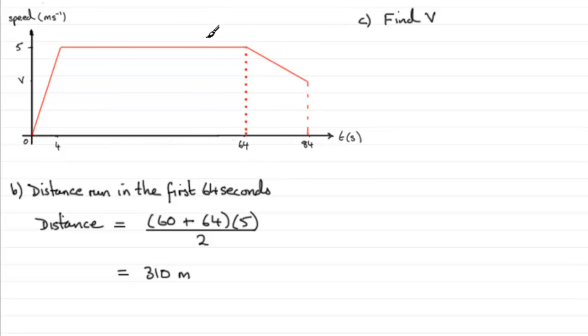So we can say that therefore 400 must be equal to this area. We've got the area of the first part here, we found it in part B, it was 310. So we've got 310 and we just need to add this to the area of this shape.